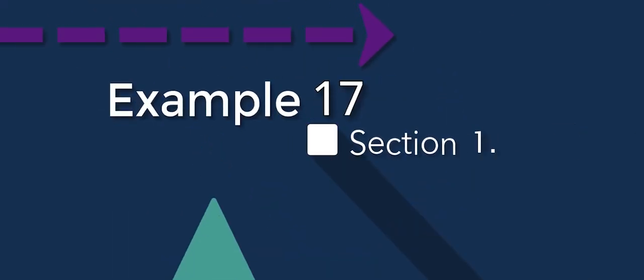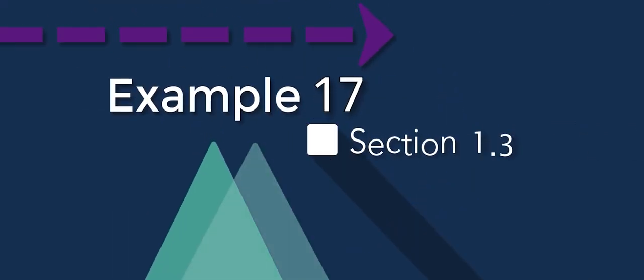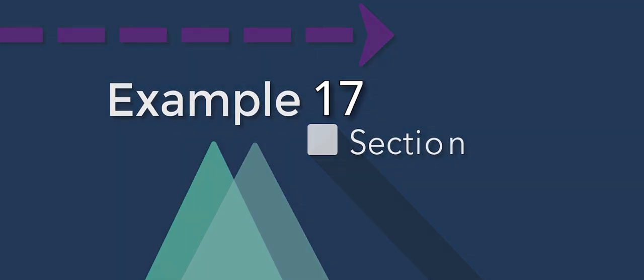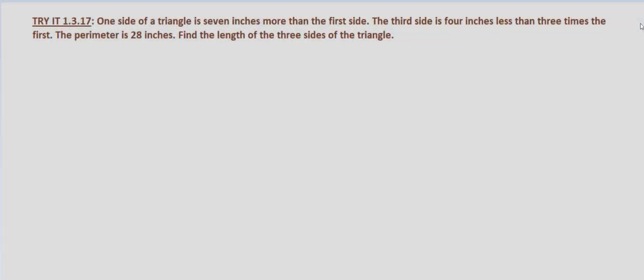With this problem we are told that one side of a triangle is seven inches more than the first side, the third side is four inches less than three times the first, and that the perimeter is 28 inches. We are asked to find the length of the three sides of the triangle.